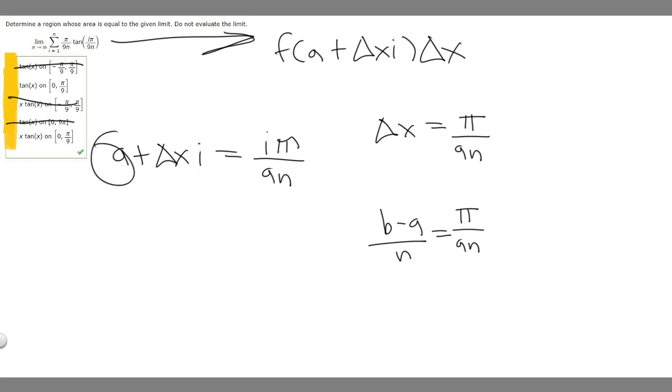If you look at a, a is 0. And so if a is 0, right, we're just going to have delta x, and we already know what that is. It's pi over 9n equals i.